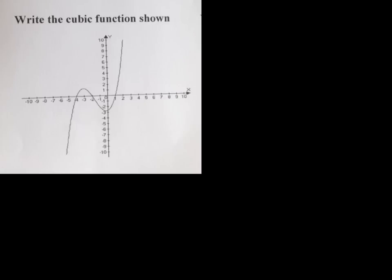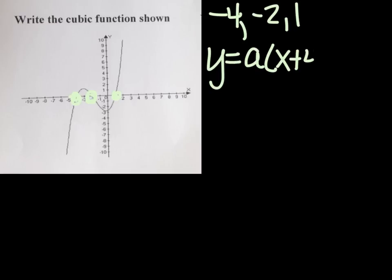We've done this before, this is just a review, but you look at the graph and you say, alright, I got three zeros that I can pull out for sure: negative four, and negative two, and positive one. That's three zeros, it's a cubic, so I'm not missing any. There's no repeats, there's no imaginaries. I know that this is going to be y equals something times x plus four, and x plus two, and x minus one.